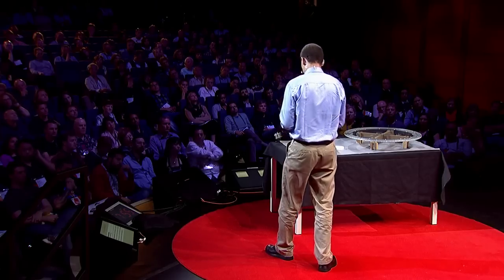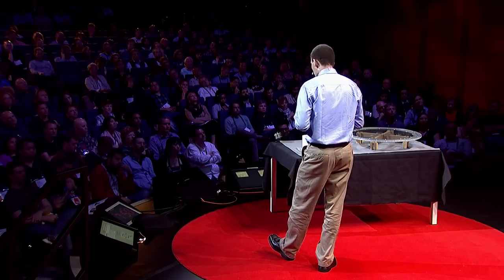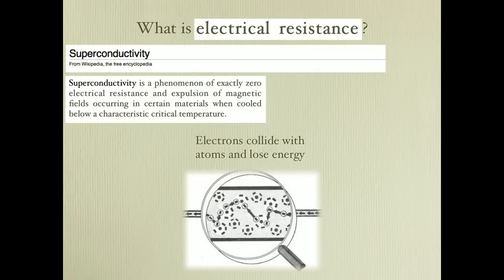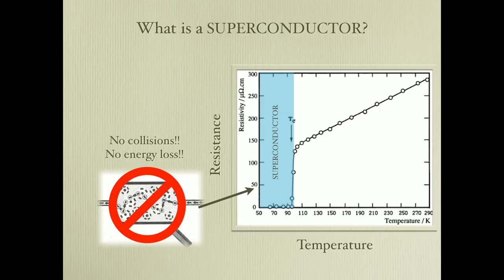That sounds complicated, but what is electrical resistance? Electricity is the flow of electrons inside a material. While flowing, these electrons collide with atoms, and in these collisions they lose a certain amount of energy, dissipating it in the form of heat — you know that effect. However, inside a superconductor there are no collisions, so there is no energy dissipation. It's quite remarkable.